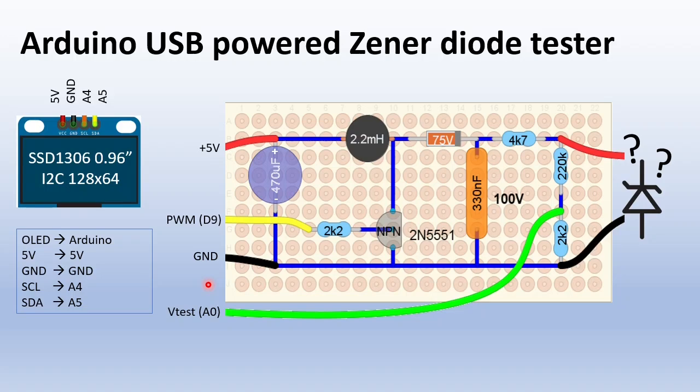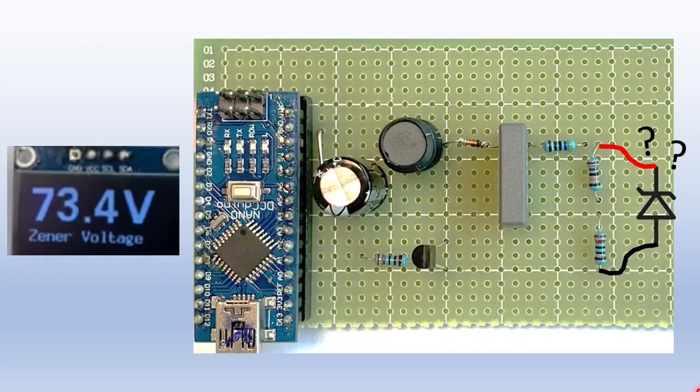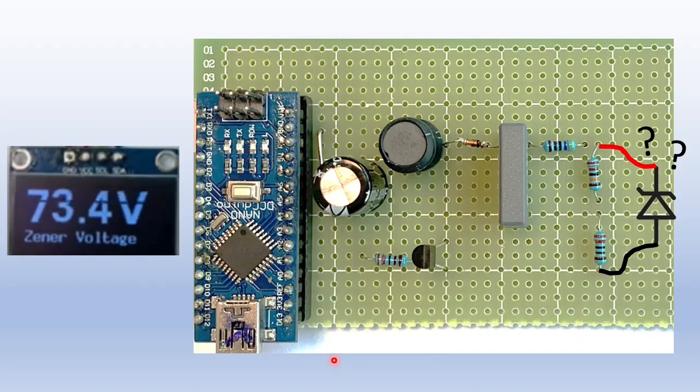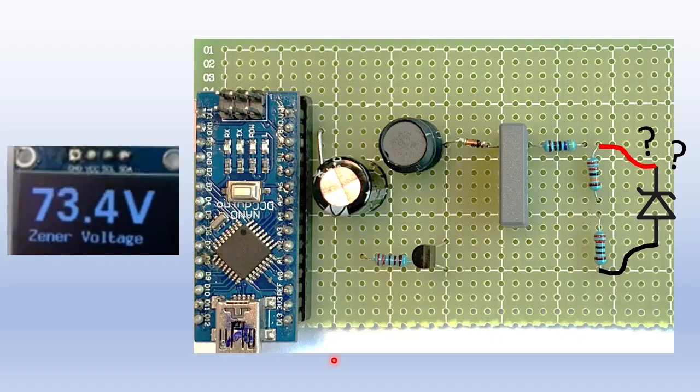Finally, connect the OLED display as shown in this table. The PCB will look like this. I recommend to use 2 female headers to mount the Arduino so you can remove it any time. Now before you power it up, you need to program the Arduino.